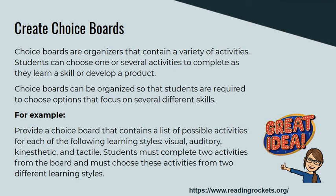Choice boards can be organized so that students are required to choose options that focus on several different skills. For example, provide a choice board that contains a list of possible activities for each of the following learning styles: visual, auditory, kinesthetic, and tactile. Students must complete two activities from the choice board and must choose these activities from two different learning styles.